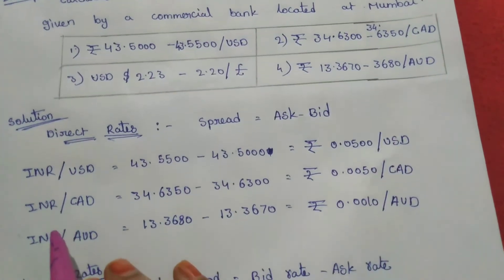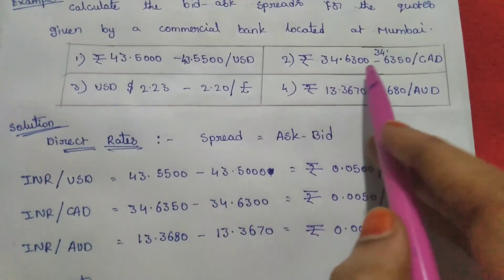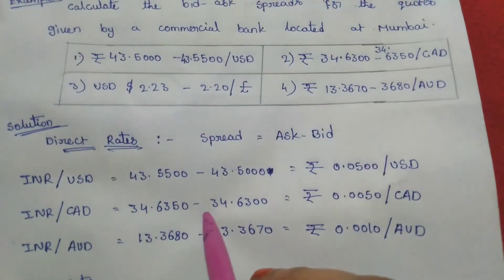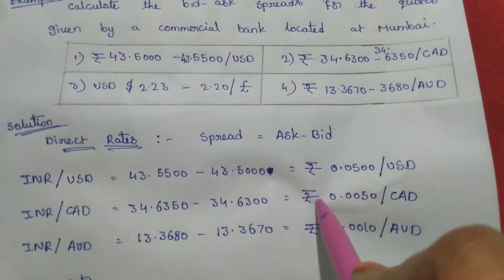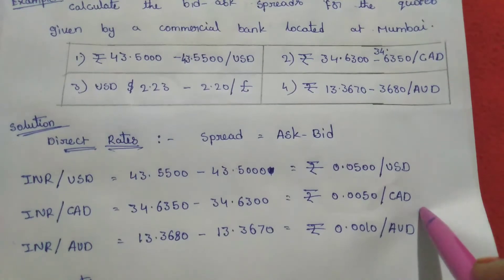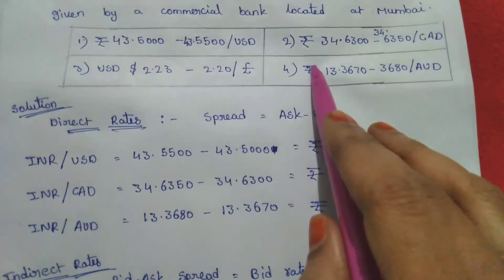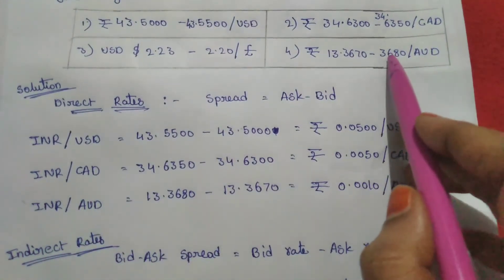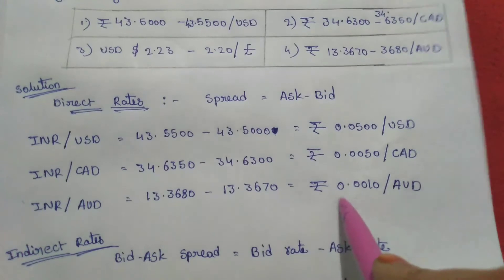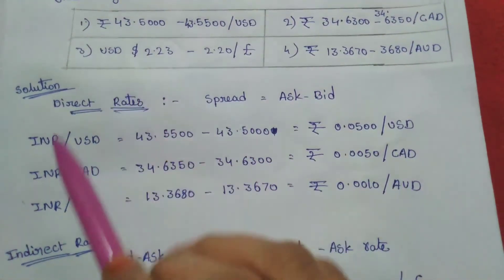For the second quotation — Indian rupees per Canadian dollar — the ask price is 34.6350 and the bid price is 34.6300. Spread = Ask minus Bid = 34.6350 minus 34.6300 = 0.0050 rupees per Canadian dollar. For the fourth quotation — Indian rupees per Australian dollar (also direct) — Spread = 36.3680 minus 36.3670 = 0.0010 rupees per Australian dollar.